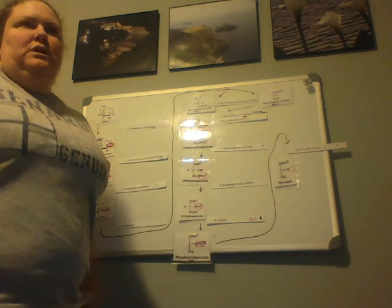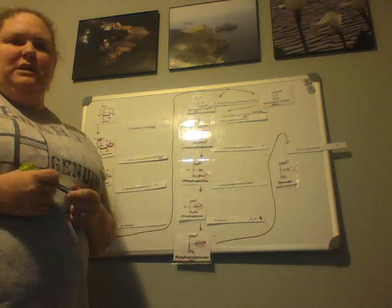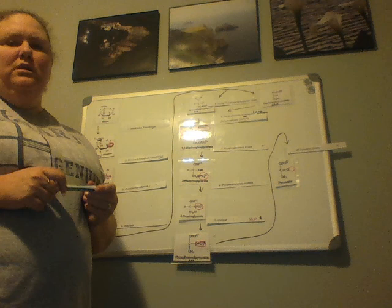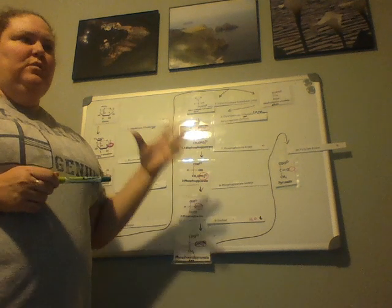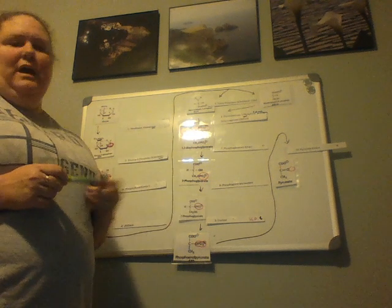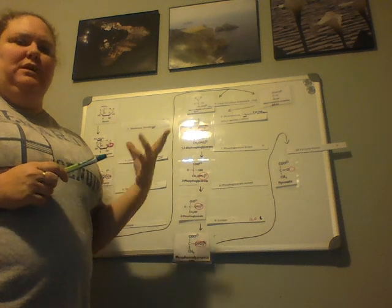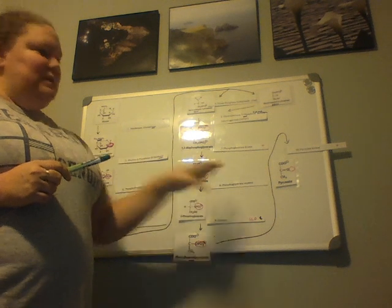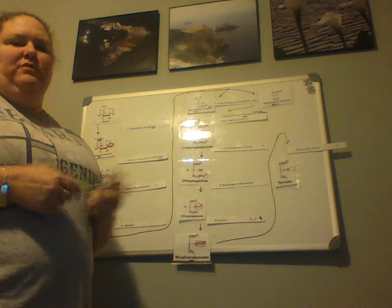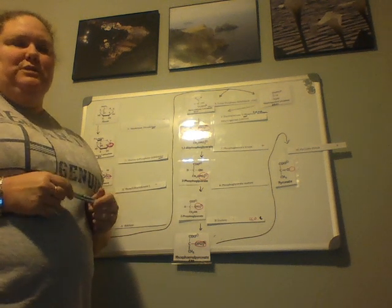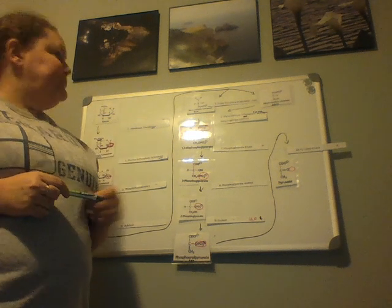You may ask, well then why don't we just do the electron transport chain, because that's when the majority of ATP is produced? But we really need to have the two other steps of glycolysis and the citric acid cycle, because products that are made in both of these cycles are factored into the electron transport chain. So we need to have those as well.